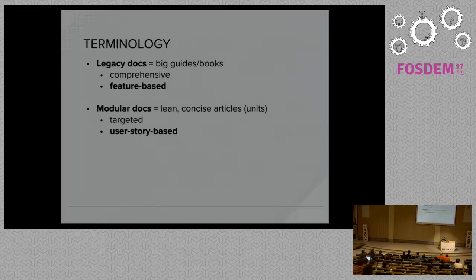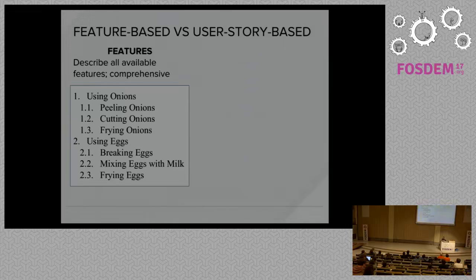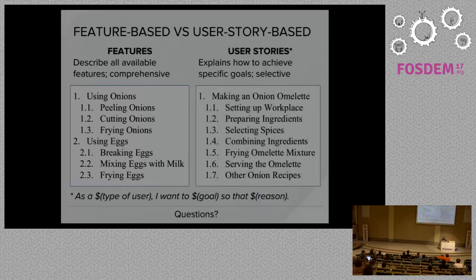I would like to illustrate the difference between feature-based documentation and documentation based on user stories with a simple example. On the left there is a silly example of feature-based documentation — it tries to describe all the features and be comprehensive. Now compare that with the example on the right. This one is based on a specific user story and tries to describe how to take the user from A to B. It's about a specific goal, about accomplishing a concrete task.